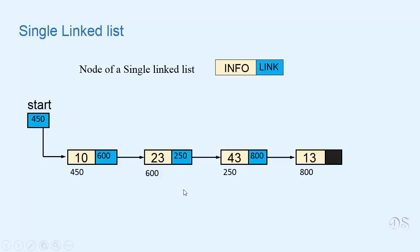This is how a single linked list looks. The info part of each node contains the actual data — here the data is only an integer value, but it can be of some other type also. The link part points to the next node of the list, so the link part of each node contains the address of the next node. The last node has no next node to point to, so its link part is null.